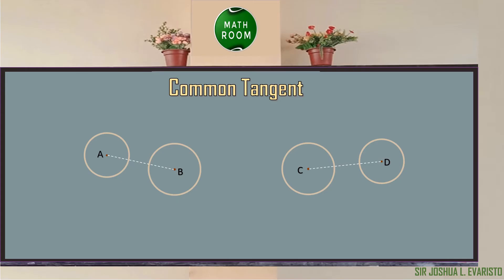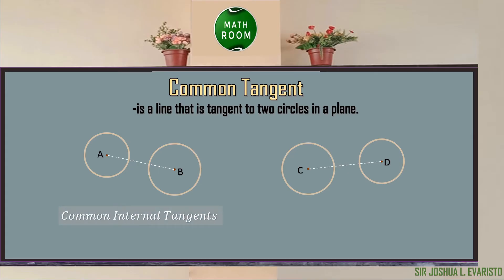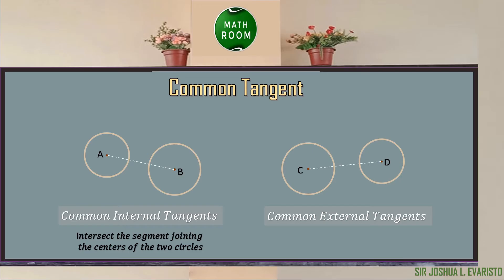Let's talk about common tangent. A common tangent is a line that is tangent to two circles in a plane. It can be in the form of a common internal tangent or a common external tangent. A common internal tangent intersects the segment joining the centers of the two circles. In the given figure, we have circle A and circle B, and the segment joining the centers is segment AB. An example of a common internal tangent is line N, and another example is line M, the red line.